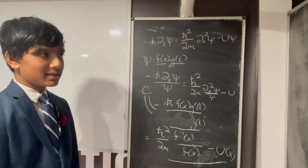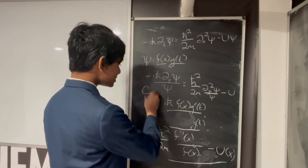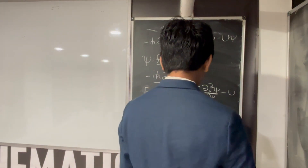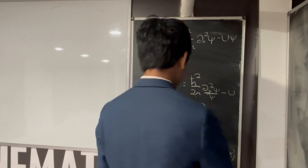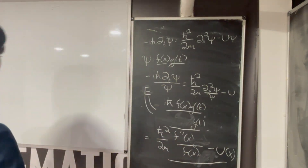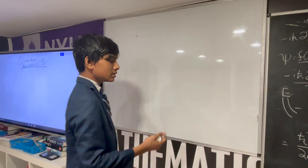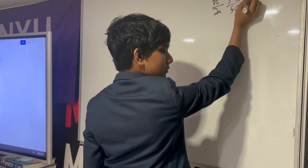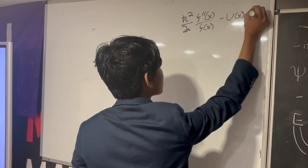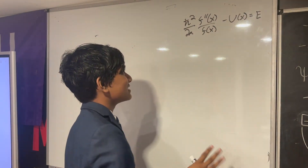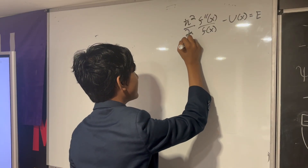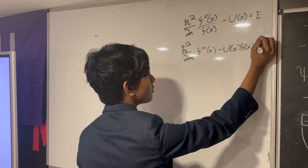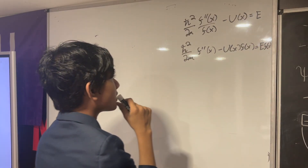I'm not going to explain the reasoning behind this again, as I've explained it several times already. This constant we're going to denote as the energy E. We've already solved this equation twice so I'll skip over it. We obtain the time-independent Schrödinger equation by setting that equal to E. Specifically, we take h-bar squared over 2m times f double-prime of x over f of x, minus u of x, set equal to E. Then multiplying both sides by f of x gives: minus h-bar squared over 2m times f double-prime of x, plus u of x times f of x, equals E times f of x.